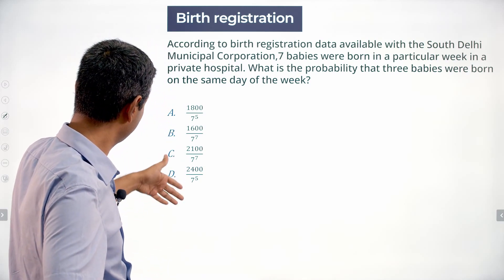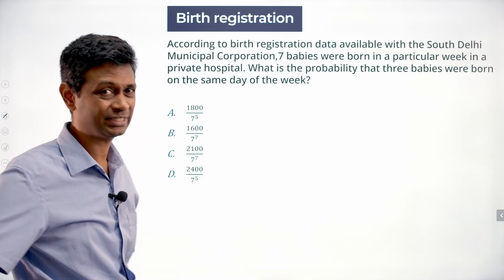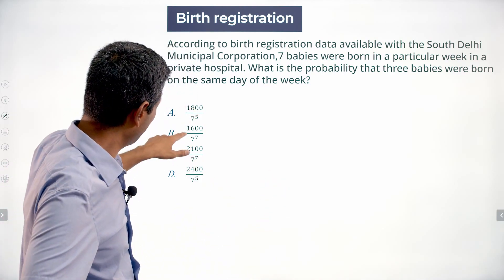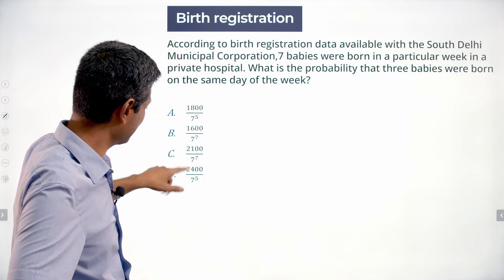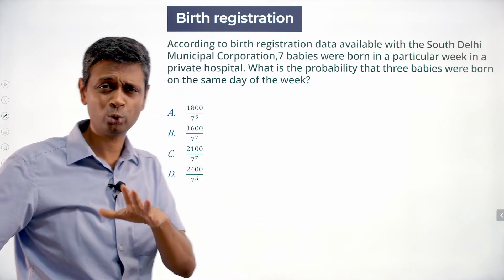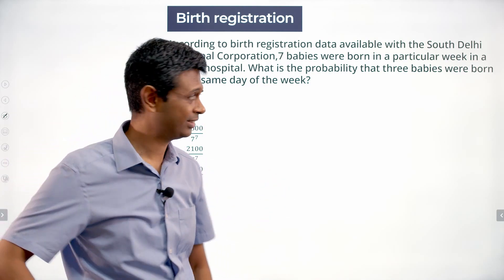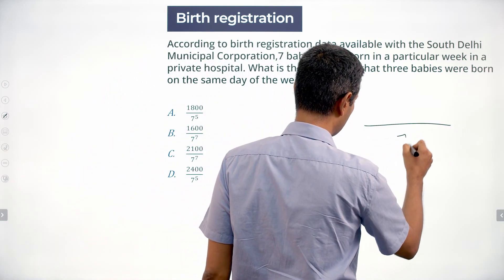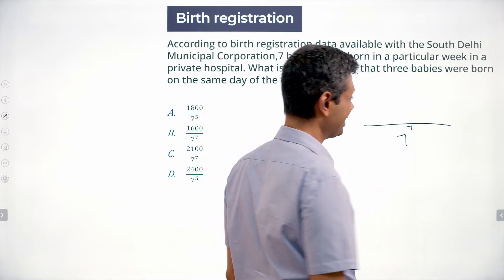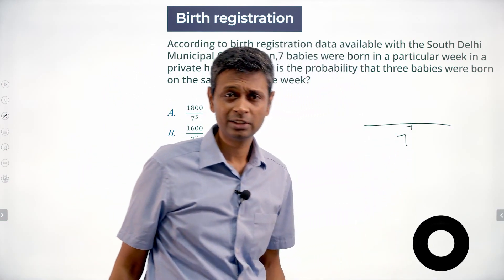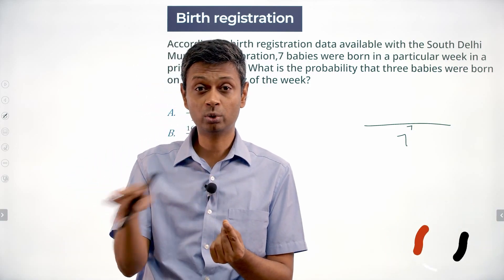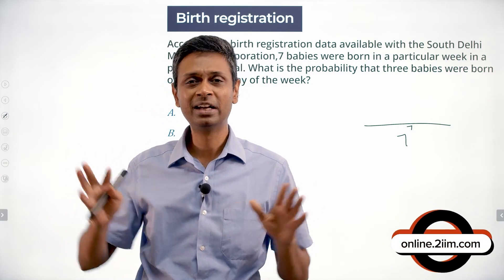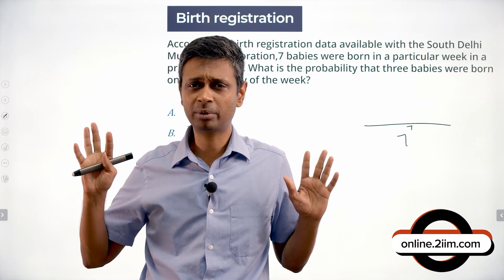The denominator is 7 power 7. Each baby could be born on any day of the week — each baby has 7 choices, Sunday to Saturday. So the denominator is 7 power 7.